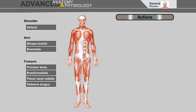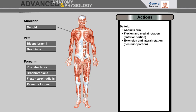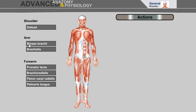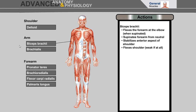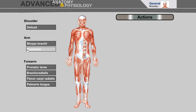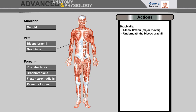Deltoid abducts the arm, flexion and medial rotation, extension and lateral rotation. Biceps brachii: flexes the forearm at the elbow, supinates the forearm from neutral, stabilizes the anterior aspect of the shoulder, and flexes the shoulder. Brachialis: elbow flexion, located underneath the biceps brachii.